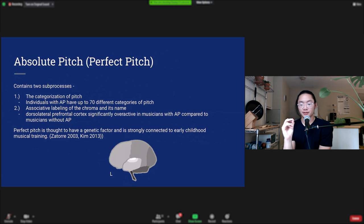Now the second part of absolute pitch, the second sub-process, is the labeling of that pitch that they've identified and the name of that pitch - for example, the key G, A, B. This is thought to occur in the dorsolateral prefrontal cortex, which is this area of your brain. In recent studies, it's been shown that that area is significantly overactive in musicians with absolute pitch compared to musicians without absolute pitch. And that area is also known for other associative factors, so it makes sense that it also controls the association between pitch and the name of the pitch.